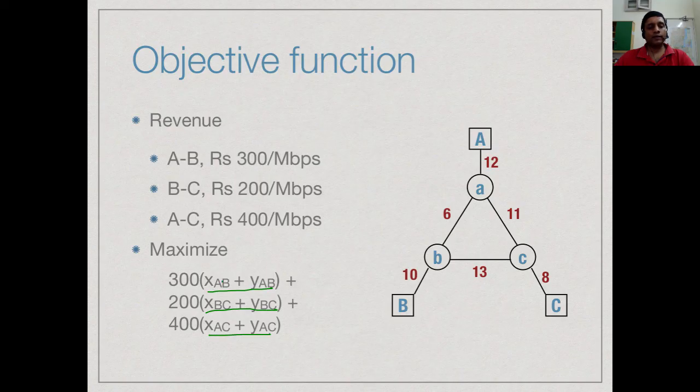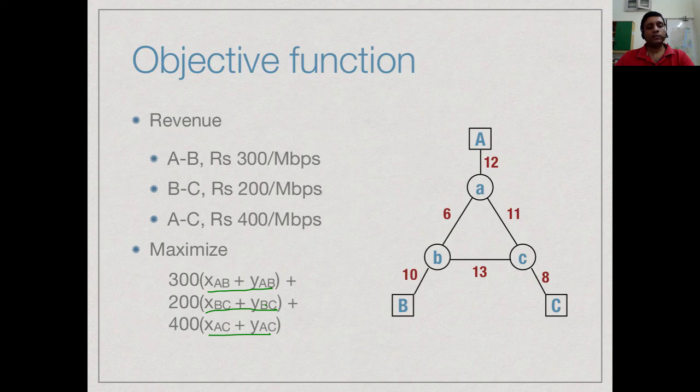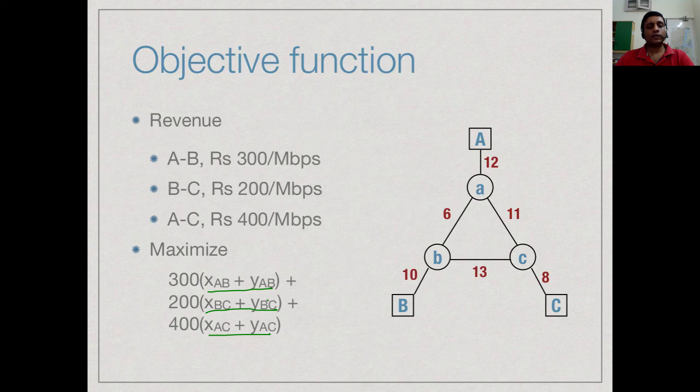If we multiply 300 into x_AB + y_AB, 200 into x_BC + y_BC and 400 into x_AC + y_AC and add it up, this is our total revenue and we want to maximize this revenue.